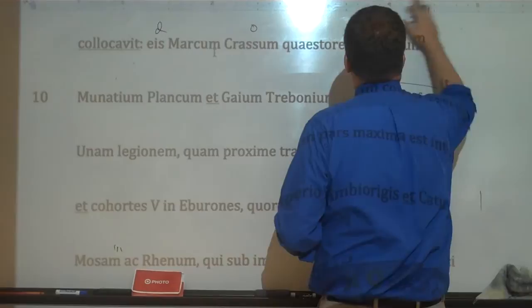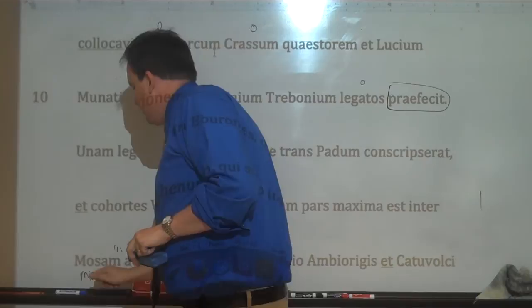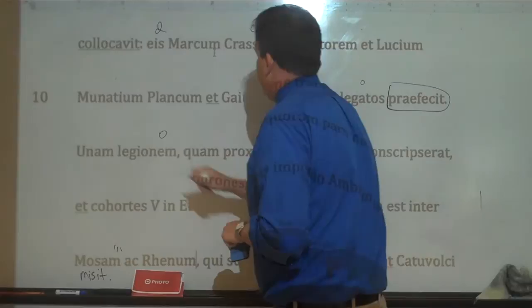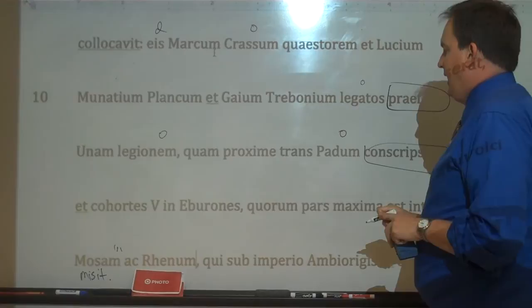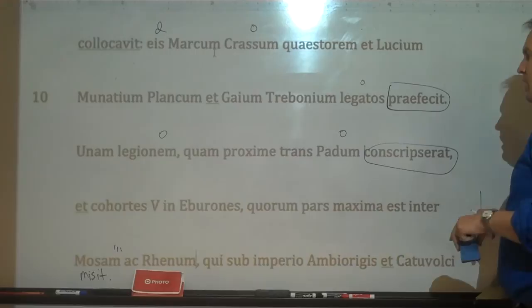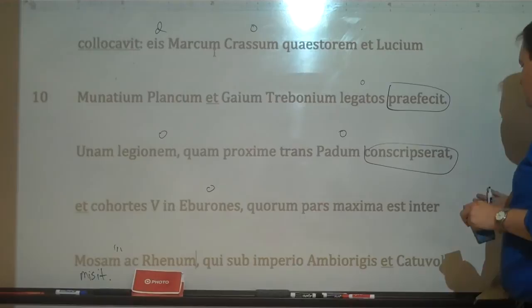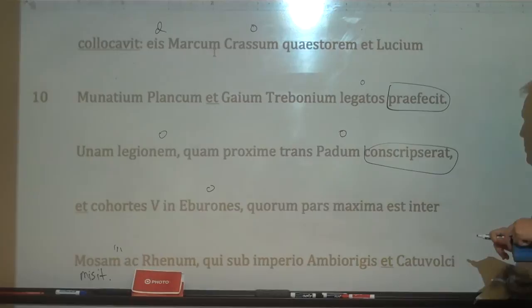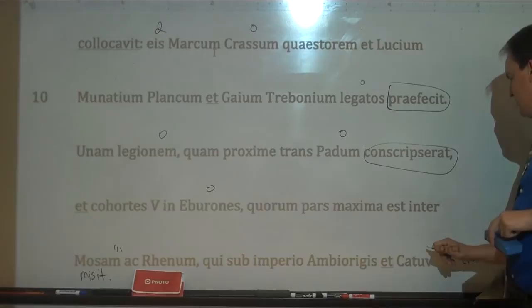He sent one legion — 'misit' is our verb way down here — one legion which recently ('proxime,' an adverb) he had conscripted across the Po River, and five cohorts among the Eburones, whose greater part is between the Mosa and the Rhine River — who were under the power of Ambiorix and Catuvulcus, who will appear later.